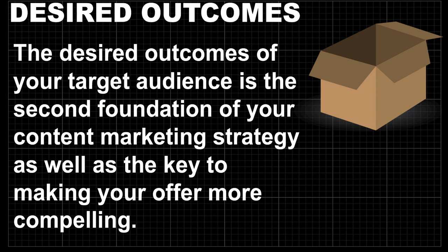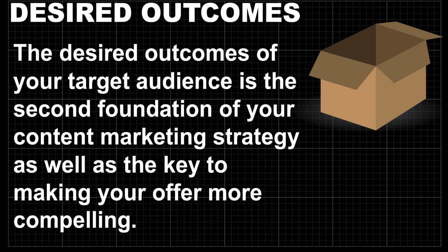The desired outcomes of your target audience form the second foundation of your content marketing strategy, as well as the key to making your offer more compelling. Here are some clarifying desired outcome brainstorming questions: What do your ideal customers want? What are their hopes and desires? What is the specific outcome that would satisfy this customer? What desire has been unachievable for them? When you figure this stuff out and really know your audience — what they actually want, their goals — it makes all your marketing and content creation that much easier.